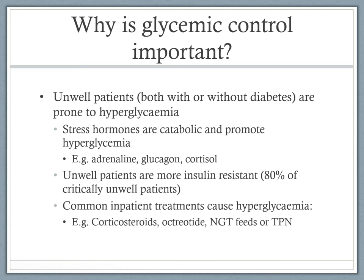There are also common inpatient treatments which cause hyperglycemia — for example, the use of high-dose corticosteroids, octreotide, and nasogastric feeds or TPN, which are often delivered at supra-physiological times such as 24-hour or 16-hour feeds. These can significantly impact a patient's blood glucose levels.